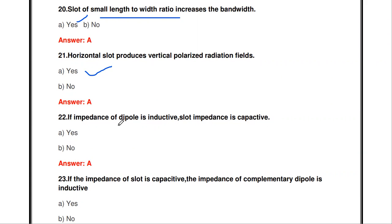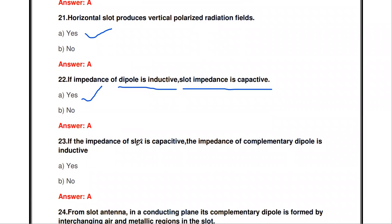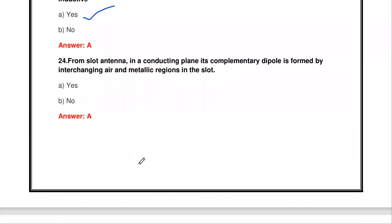If the impedance of the dipole is inductive, the slot impedance is capacitive — correct. Similarly, if the impedance of the slot is capacitive, the impedance of the complementary dipole is inductive — also correct. They are opposite in nature.